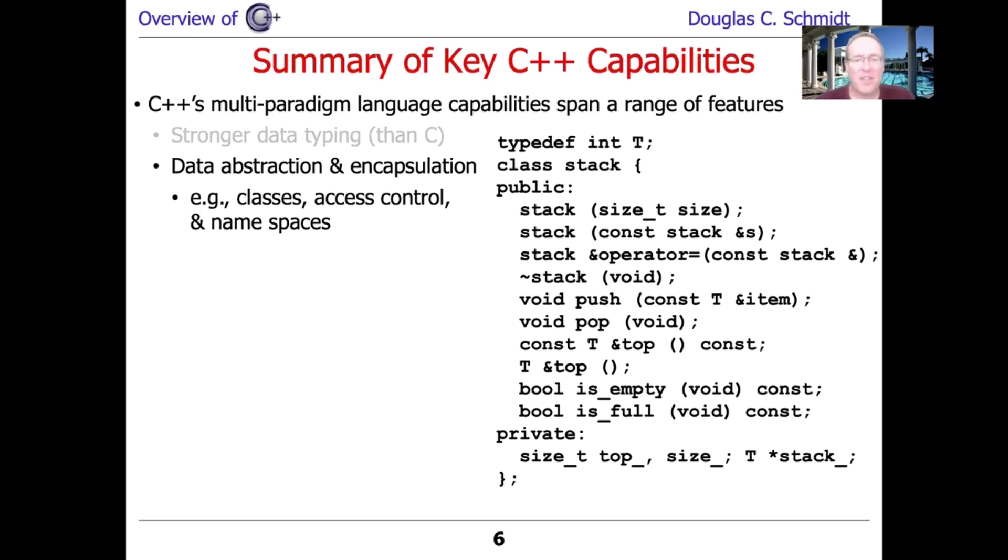And then we can define a bunch of methods. We have the so-called big three methods, the copy constructor, the assignment operator, and the destructor. And we also have a constructor that takes a size and makes a stack of that size. And then we've got methods like push and pop and top and is empty and is full. And we'll talk more about those in a second when we get into the details of this. And then we have something, and those are all public methods.